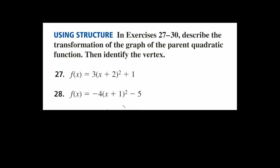For problems 27 and 28, we're describing all transformations together. Problem 27: f of x equals 3 times x plus 2, squared, plus 1. The 3 is out in the open with no x attached, so it's vertical. Since 3 is bigger than 1, that's a vertical stretch by a factor of 3. The plus 2 inside becomes minus 2 — two spaces to the left. The plus 1 at the end means moving up one spot.